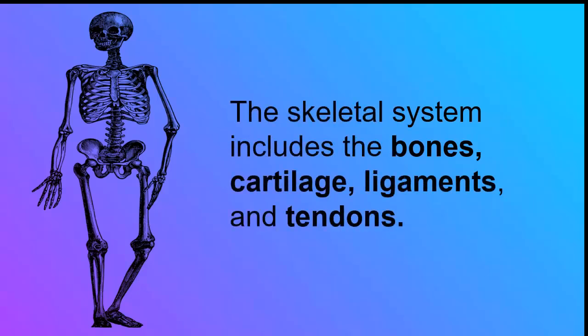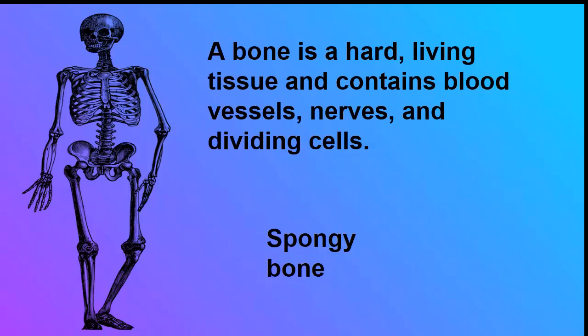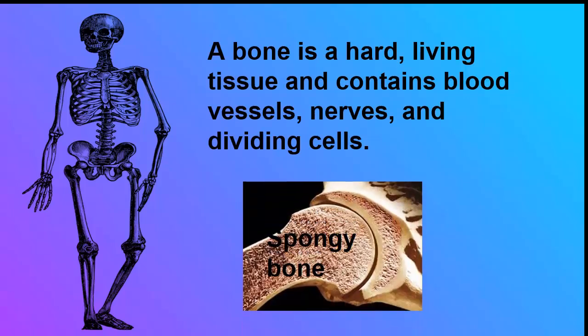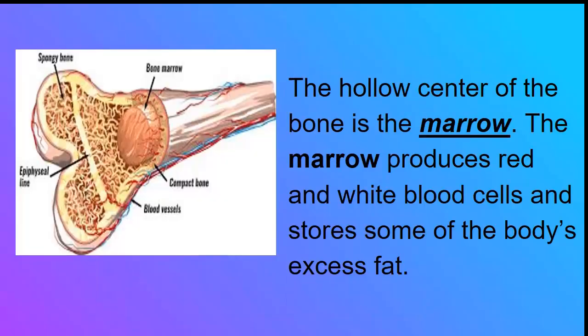The skeletal system includes the bones, cartilage, ligaments, and tendons. A bone is a hard, living tissue and contains blood vessels, nerves, and dividing cells. Most bones are hollow and spongy inside. The hollow center of the bone is called the marrow. The marrow produces red and white blood cells and stores some of the body's excess fat.